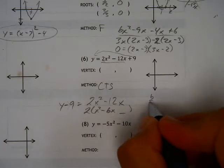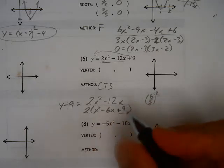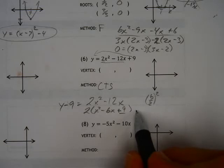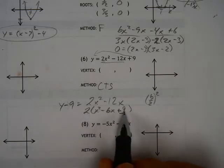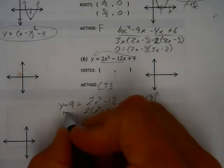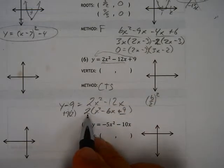And that something, b over 2 squared, is 9. So I'm adding 9 to both sides. Now, in the past, we've also done the add 9 and subtract 9 times 2. But let's do this. If I have stuff on the other side, I can add 9 here and add 9 here, also remembering I'm multiplying it by 2.